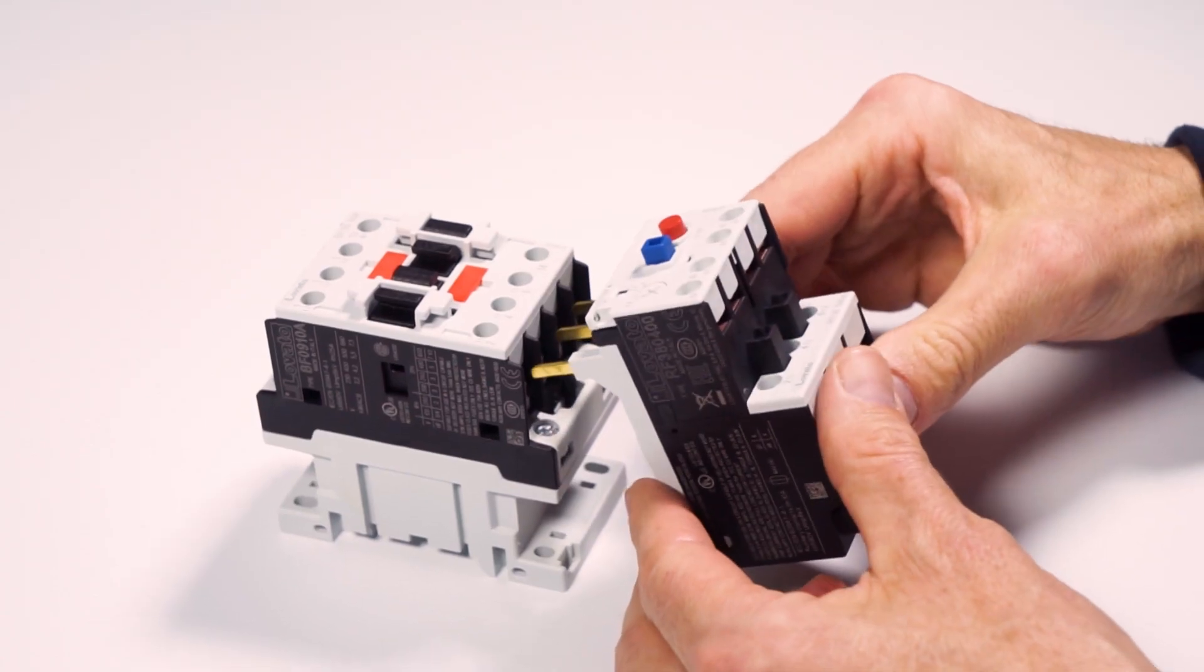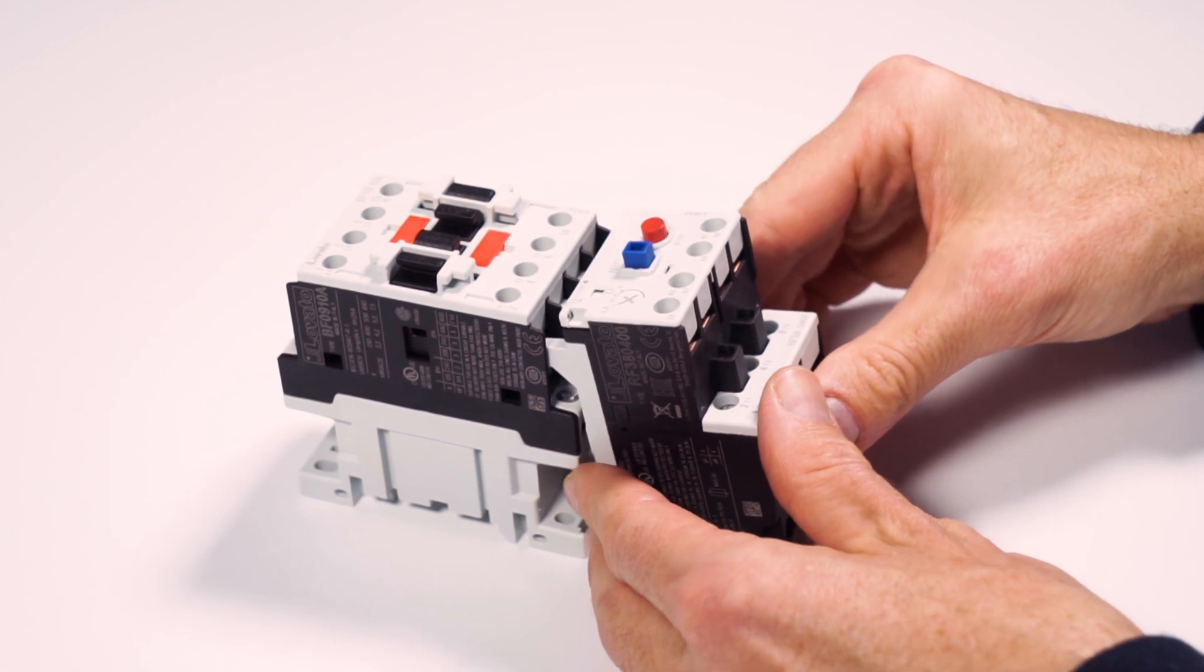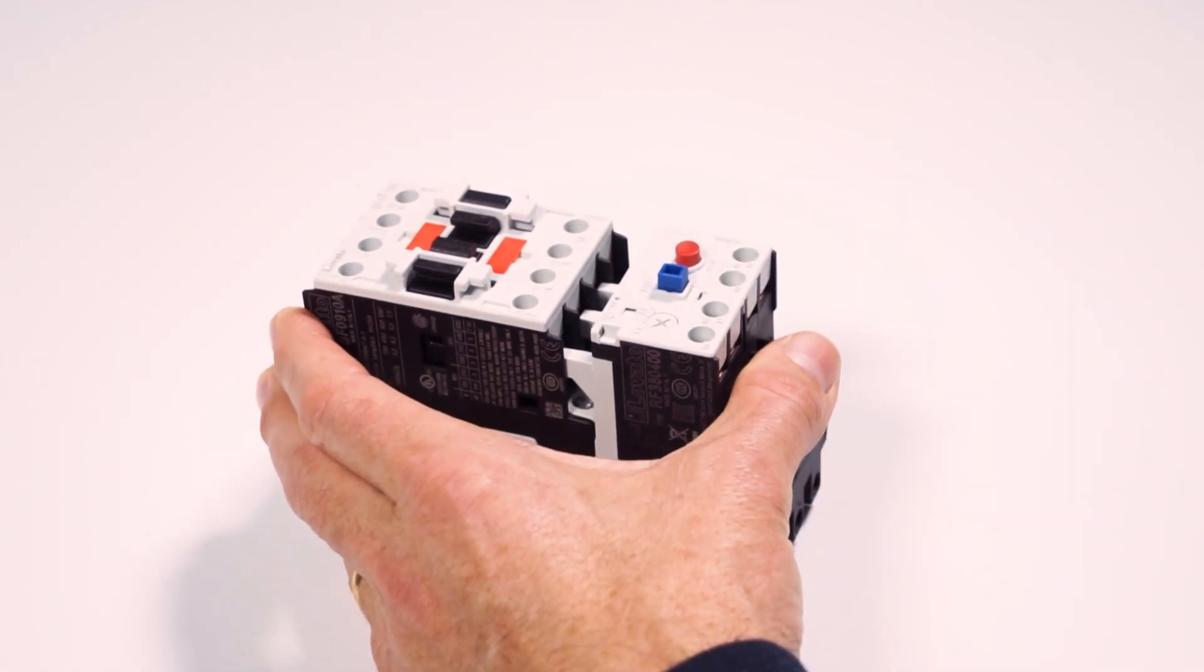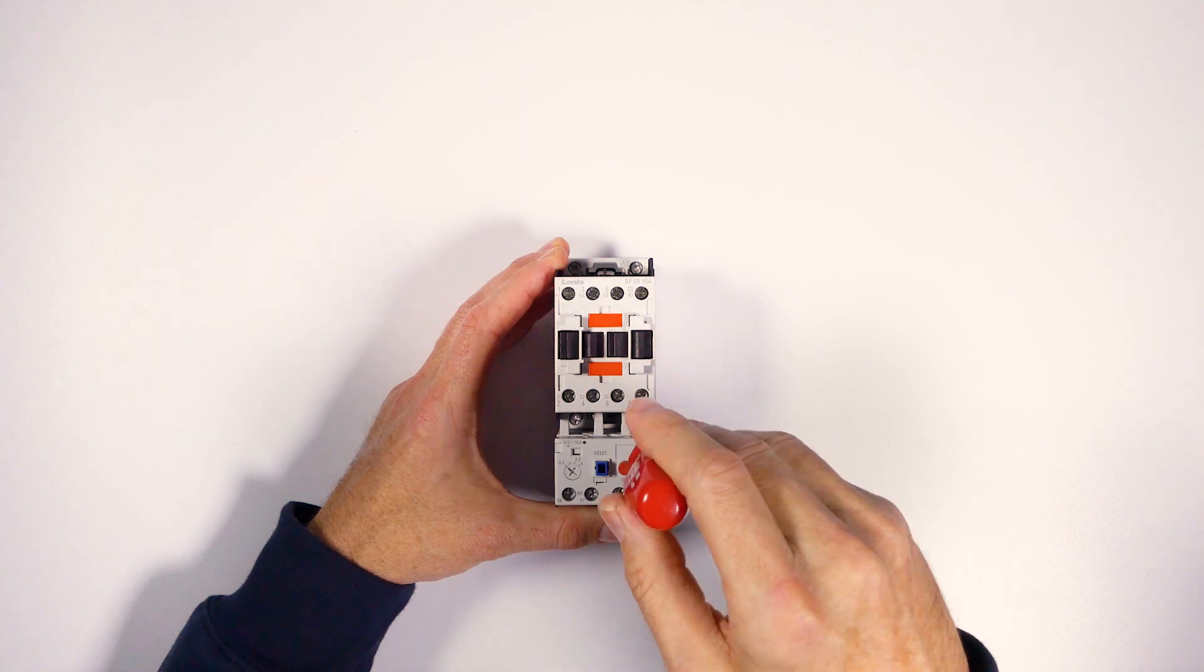Then tilt the relay slightly. Push it towards the base of the contactor and make sure its feet engage securely, like this. Then tighten all the screws.